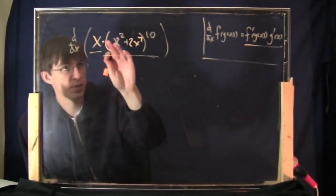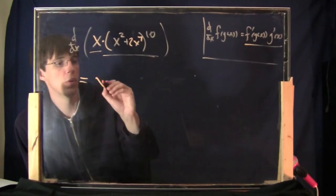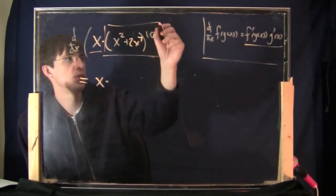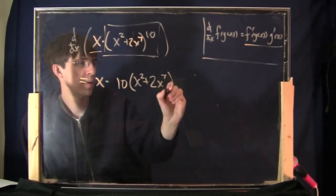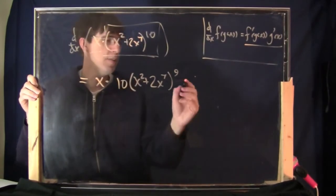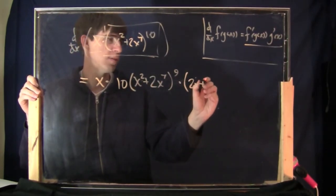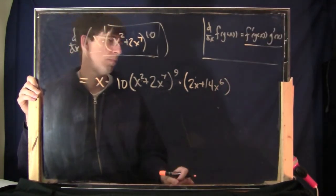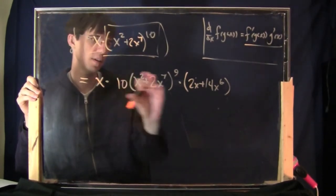First and foremost this is a product rule, because it's a product. I hope you remember the product rule: the first thing times the derivative of the second thing, plus the second thing times the derivative of the first thing. The first thing is x. Now the derivative of the second part — I have to do the chain rule. Taking the derivative of just that much: the derivative on the outside gives the 10 out front, the same stuff inside to the 9th. That's the derivative of the outside function, the outside being the 10th power. Then multiply by the derivative of the inside — the derivative of x squared plus 2x to the 7th — that would be 2x plus 14x to the 6th. That was the chain rule.